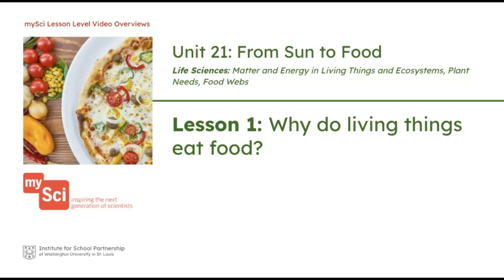In this lesson, students are introduced to the anchoring phenomenon and they create a class driving question board. Students revisit previous learning about living things and ask questions about how animals and plants on a farm get what they need to survive. Students make predictions and set up the sprouter investigation. Students then observe how yeast reacts to food and consider how this is similar to how humans use food. They discuss how matter and energy move through both yeast and humans. Finally, they begin to develop an initial model of a pizza farm.